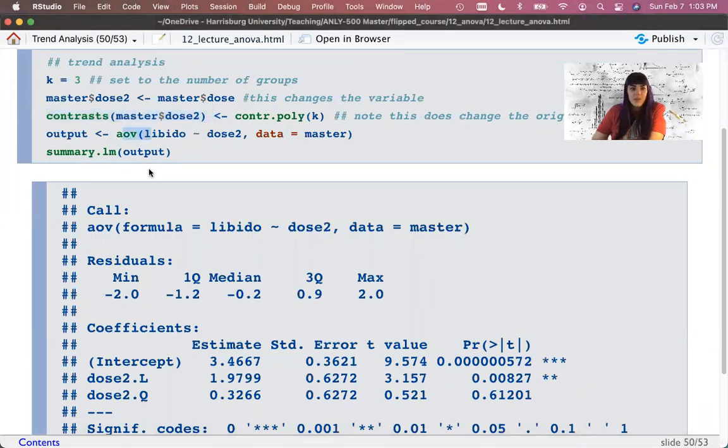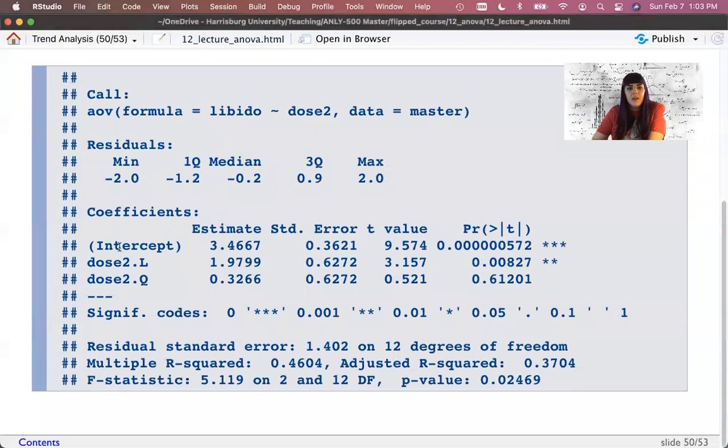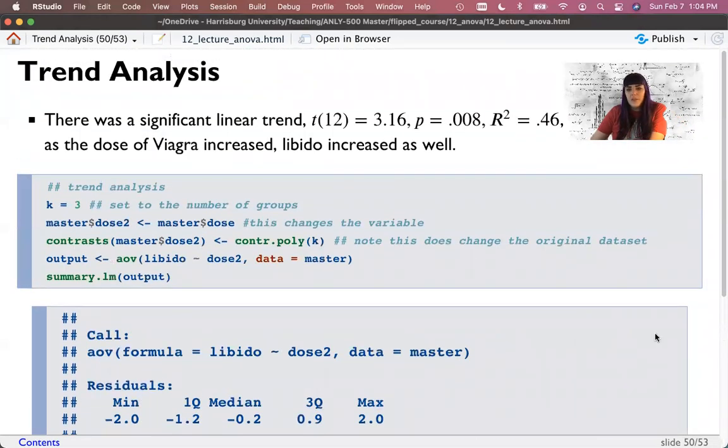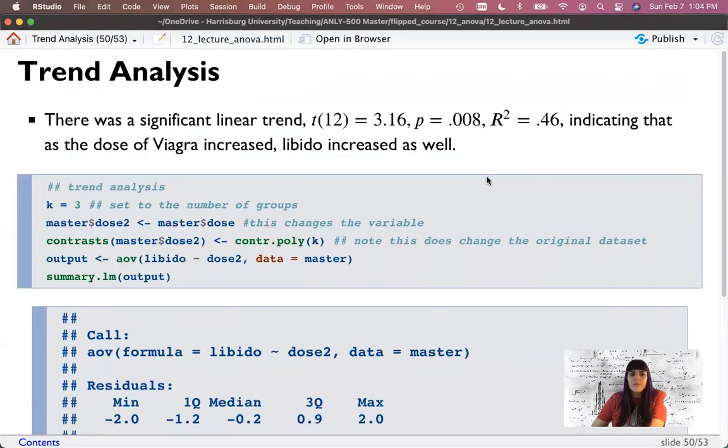Then we're going to run the aov function, which runs an ANOVA. It's the same thing as lm. It just gives you the output in ANOVA format. Libido is predicted by dose two. And then show me the linear output. It says here's the linear trend. And then here is the test for the quadratic trend. The linear trend is significant because this is nice, clean data. The quadratic trend is not. Notice our F value is the same. This is the same test. Basically, it's just testing if it's linear or quadratic instead of thinking about group differences. So remember, ANOVA math is regression. And you should get all the same effect sizes, too. So what we would do is report that t-test. There's a significant linear trend, t, with degrees of freedom 12, and then r squared.